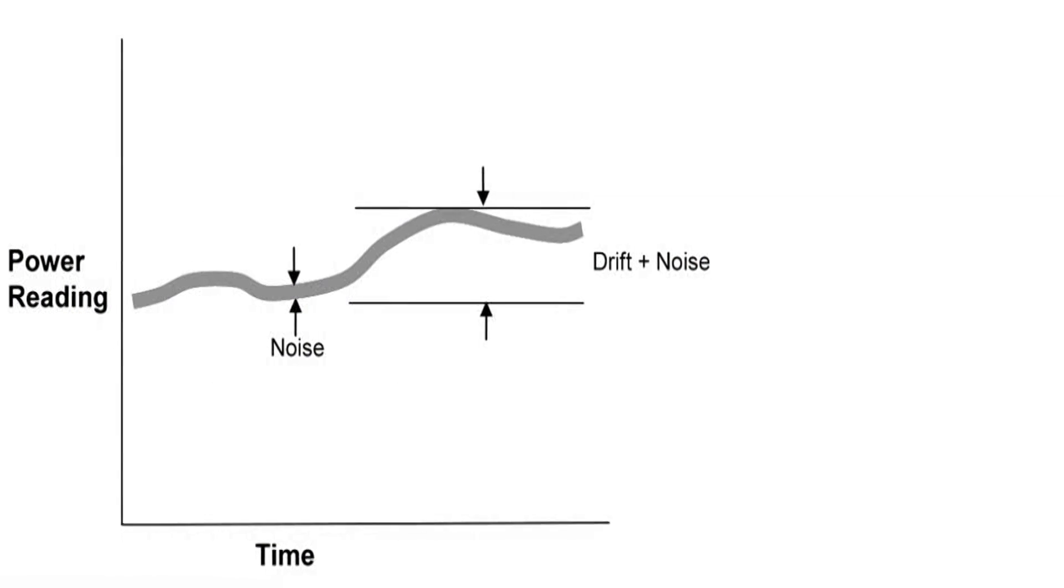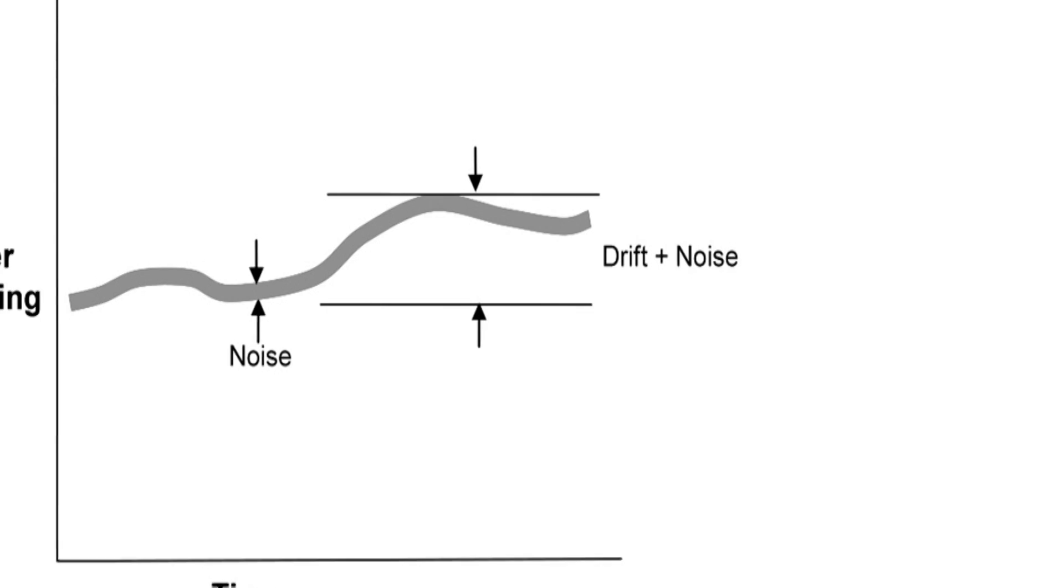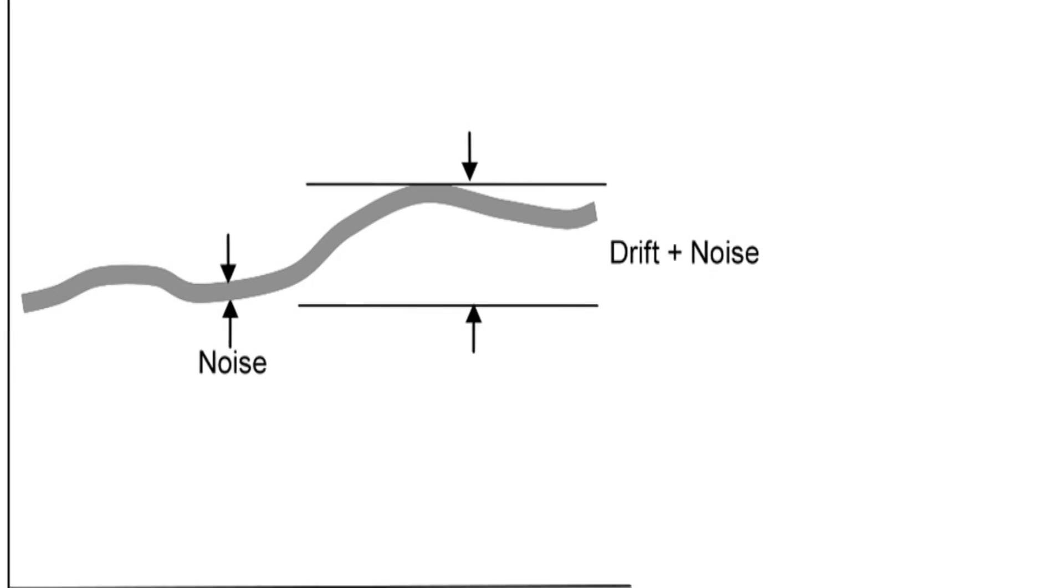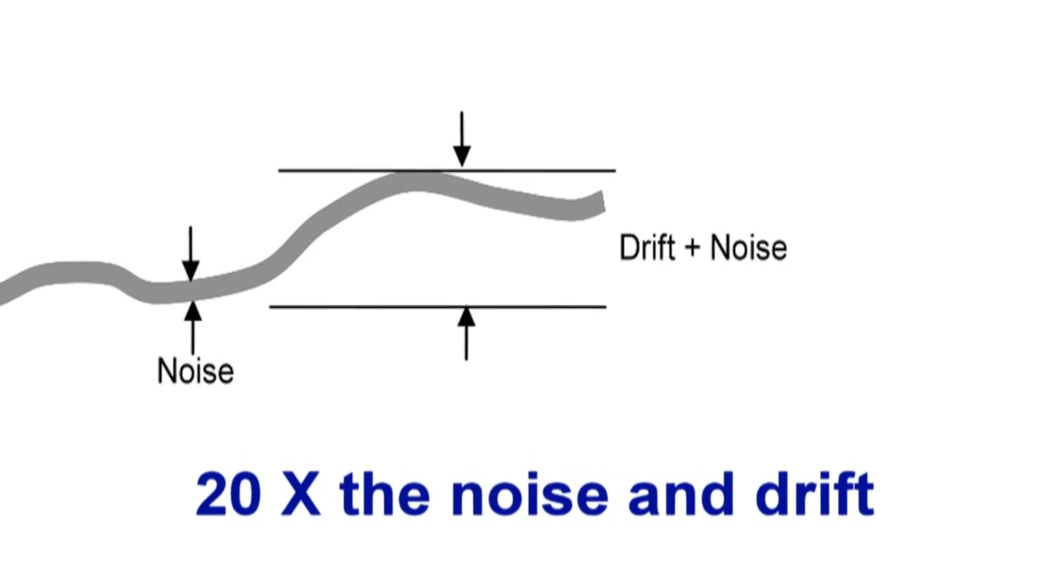The diagram shown here is an exaggerated view of the noise and drift of a power meter. You would see this kind of graph if you're measuring very low powers. So if we're measuring the minimum amount of power, we take the noise and when it's important to drift, and we say that the measurement is 20 times that noise and drift. In other words, the maximum error that you can expect at the lowest measurable power is 5 percent.